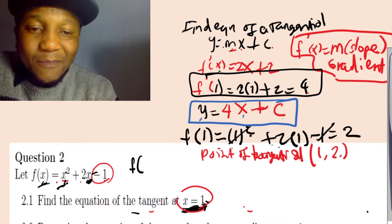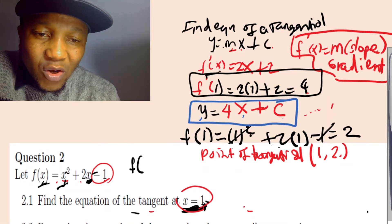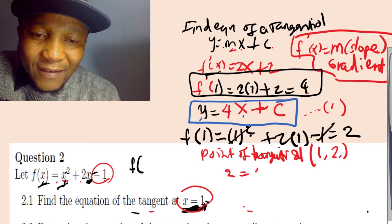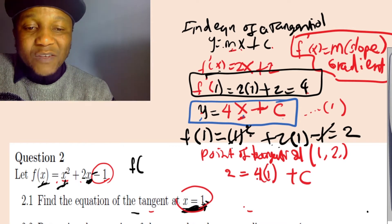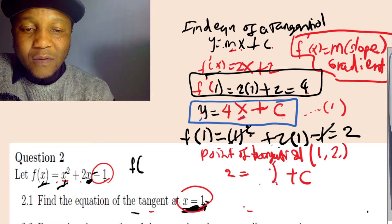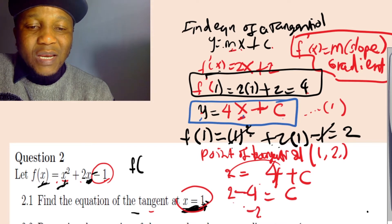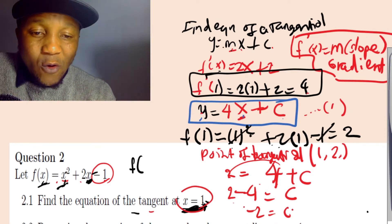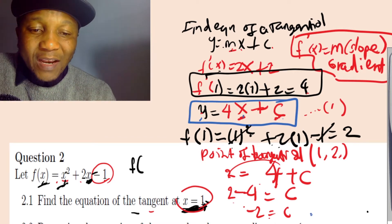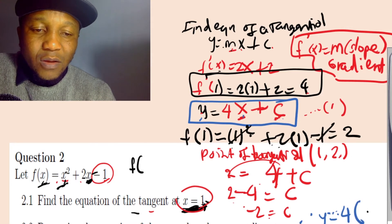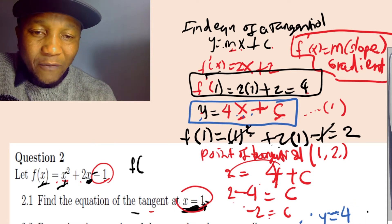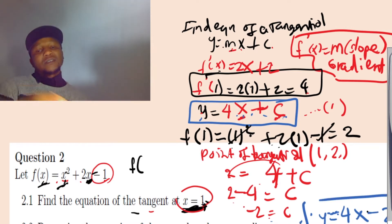Now I can substitute into the equation. We have y = 2 at x = 1, so: 2 = 4(1) + c, which gives 2 = 4 + c, so c = 2 - 4 = -2. So c = -2. We take this -2 and plug it in. The equation of the tangent is y = 4x - 2.